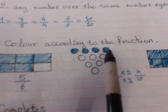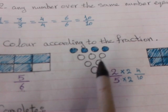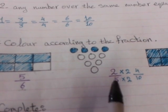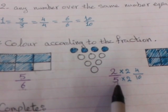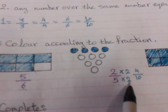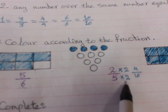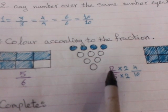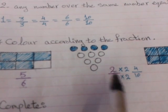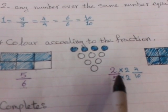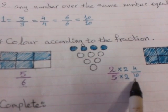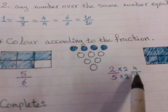How many parts in the next shape? 1, 2, 3, 4, 5, 6, 7, 8, 9, 10. The denominator will be 10. How do we convert 5 to 10? By multiplying by 2. If we multiply the denominator by a number, we must multiply the numerator by the same number. So 5 multiplied by 2 equals 10, and 2 multiplied by 2 equals 4. So we will color 4 parts.